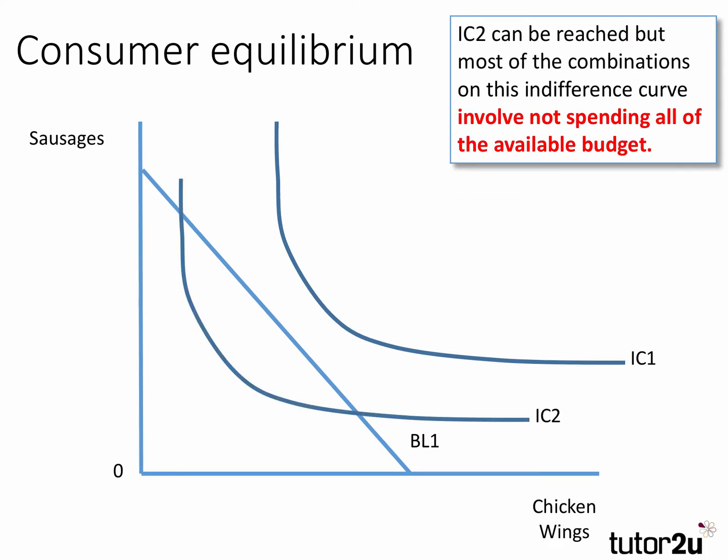They could reach many of the combinations along IC2, but living at IC2 gives you a lower total level of satisfaction. Most of those combinations lie within the budget line, so you're not using up all of your income. We're assuming here that saving money and not spending carries no utility — you're only facing a choice between sausages and chicken wings.